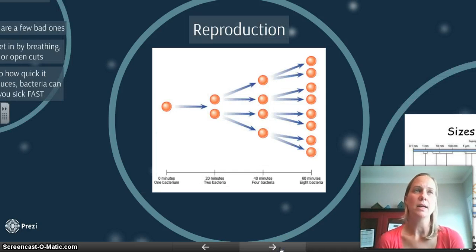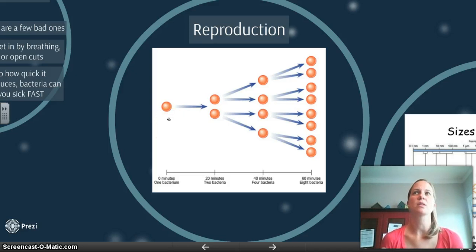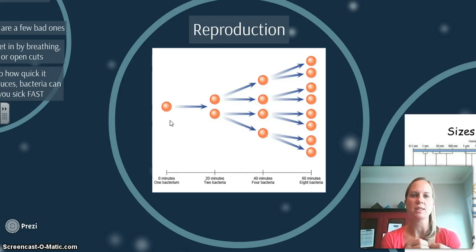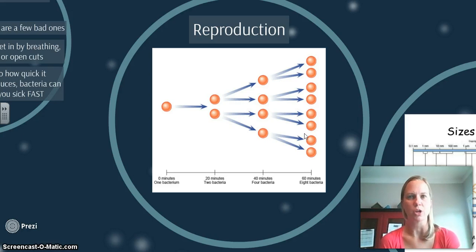Now bacteria reproduce in a very quick method, which is why you are going to get sick quicker with an infection from bacteria than you would something like a virus. Bacteria don't reproduce by needing a male and a female. They reproduce by simply having one, and it splits into two. It's called binary fission. You go from one to two, and after a little bit of time, two goes into four, and then much, much bigger. In an hour's worth of time, that's a lot of bacteria that have developed. Some of these bacteria reproduce in 20 minutes, so in a 24-hour period, you can have a humongous load of bacteria in you, thus making you very, very ill.